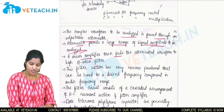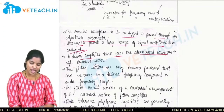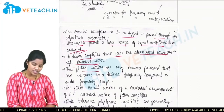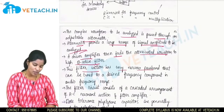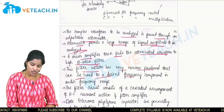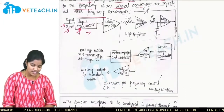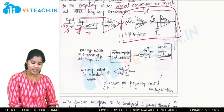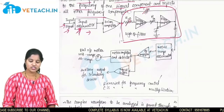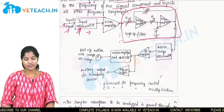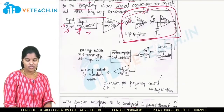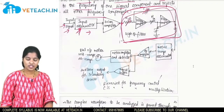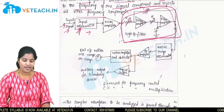The driver amplifier then feeds the attenuated waveform to the high-Q active filter. This filter section has a very narrow passband that can be tuned to a desired frequency component in the audio range. The driver output is given to the Q coil where R and C values can be adjusted so that the passband of this circuit is tuned to the desired value.